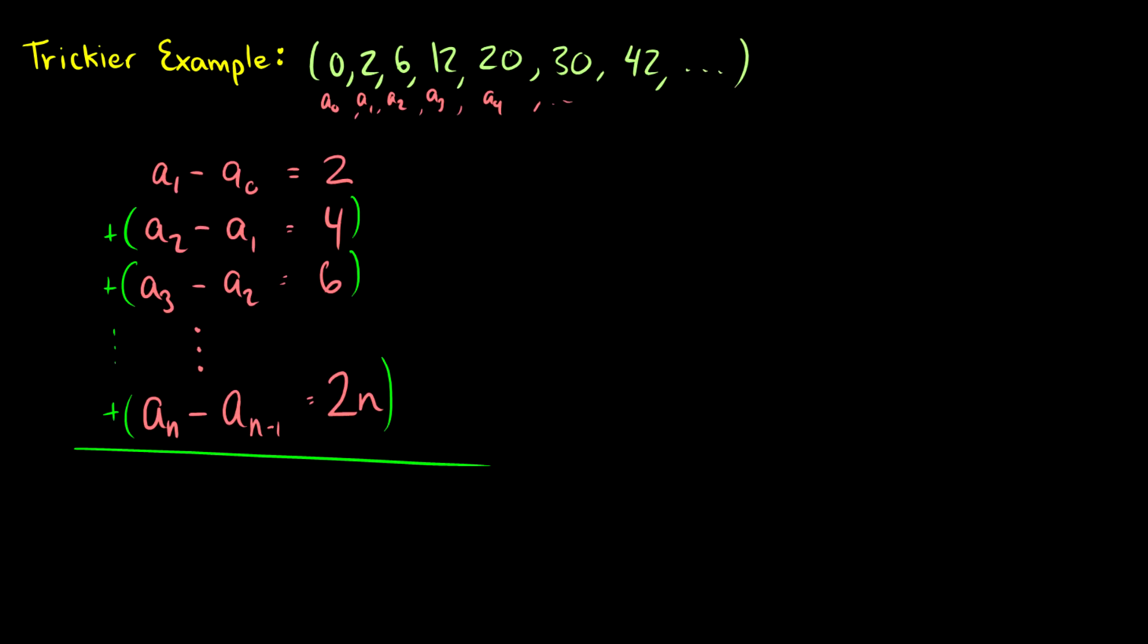a_1 minus a_0 plus a_2 minus a_1. We're going to get a_1 minus a_1, so these a_1s are going to cancel. Then we're going to get a_2 plus a_3 minus a_2, so these a_2s are going to cancel. And similarly, the a_3s will cancel, all the way up for the a_(n-1)s will cancel, and we'll be left with a_n minus a_0.